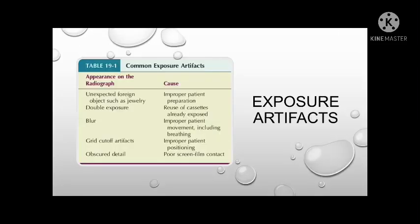Here is a summarized table for the causes of exposure artifacts and their appearance on the radiograph. Improper patient preparation can show an unexpected foreign object such as jewelry, which appears as radiopaque. Mixed-up cassettes will have a double exposure of two different body parts once developed. Improper patient movement will cause blurring, improper patient position will show grid cut-off artifacts, and poor screen film contact will obscure details on the image.